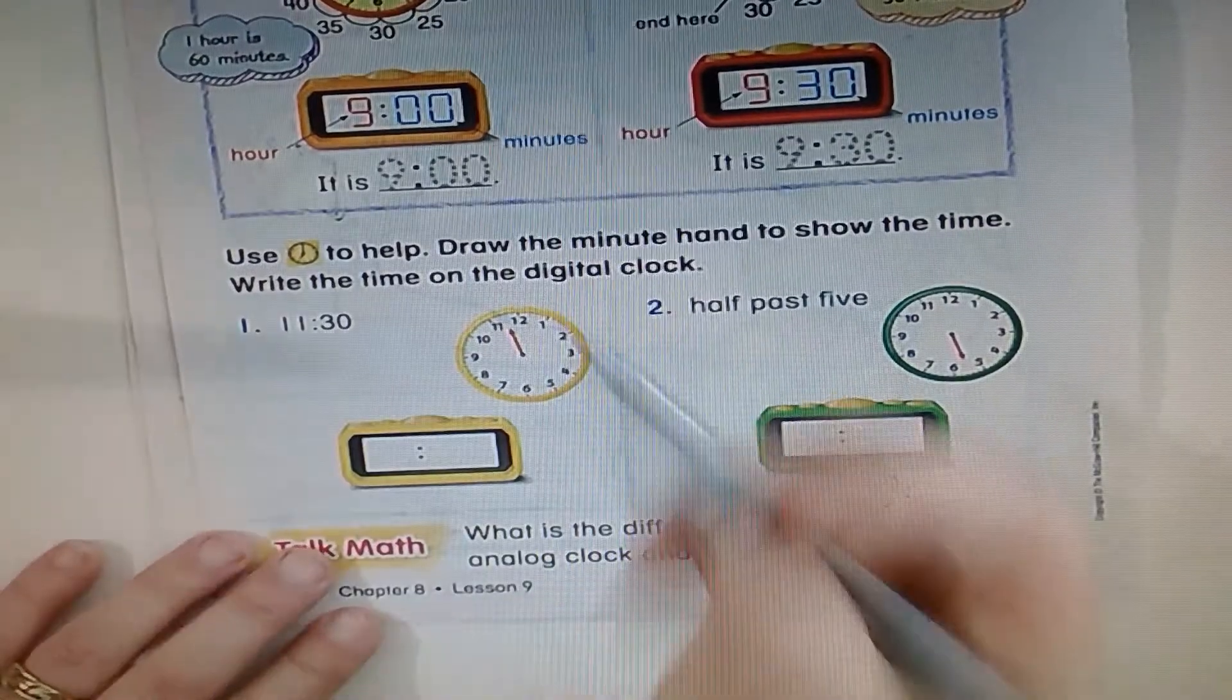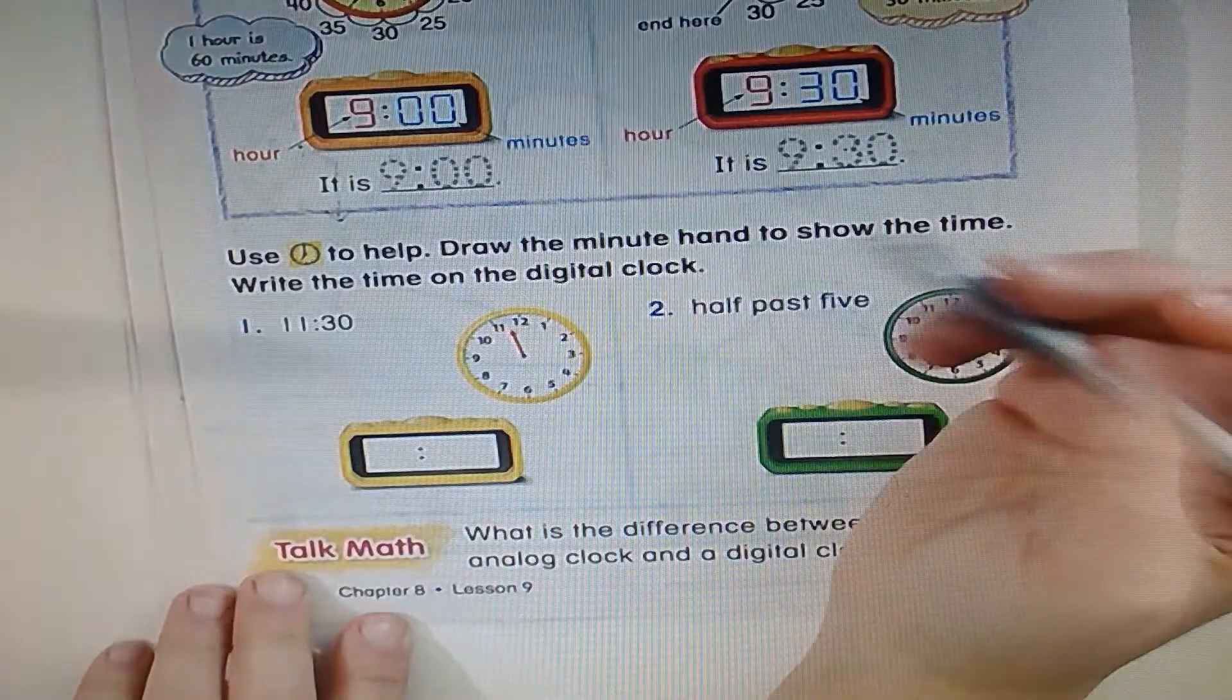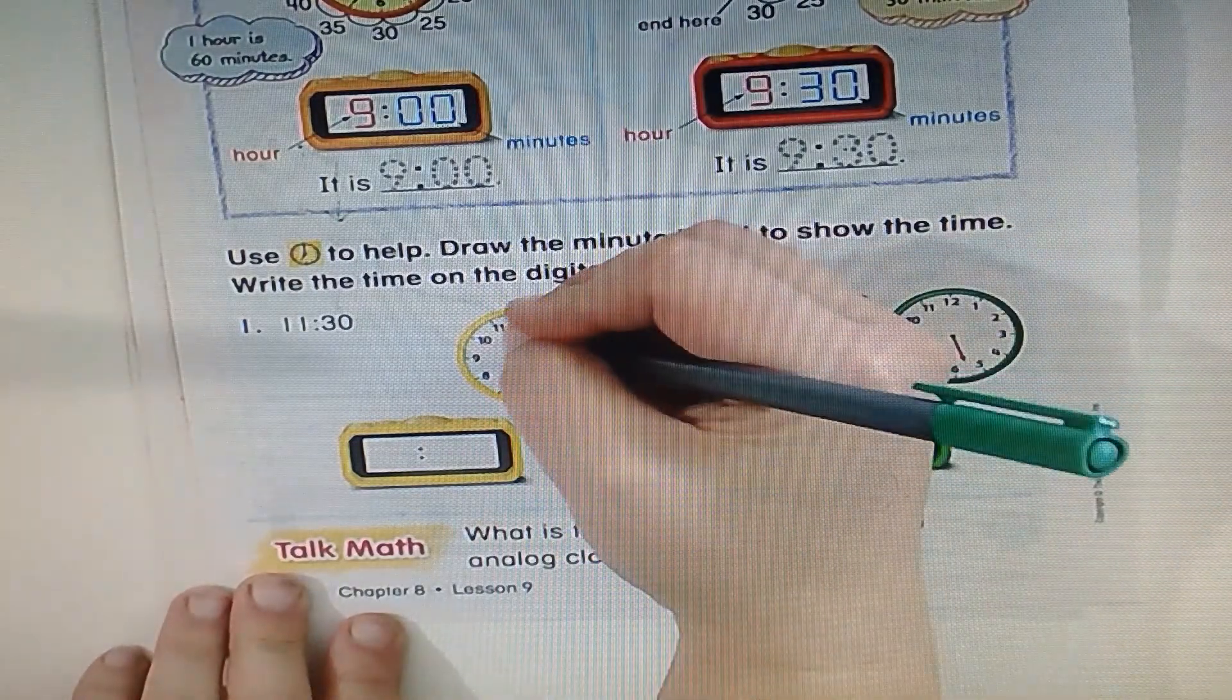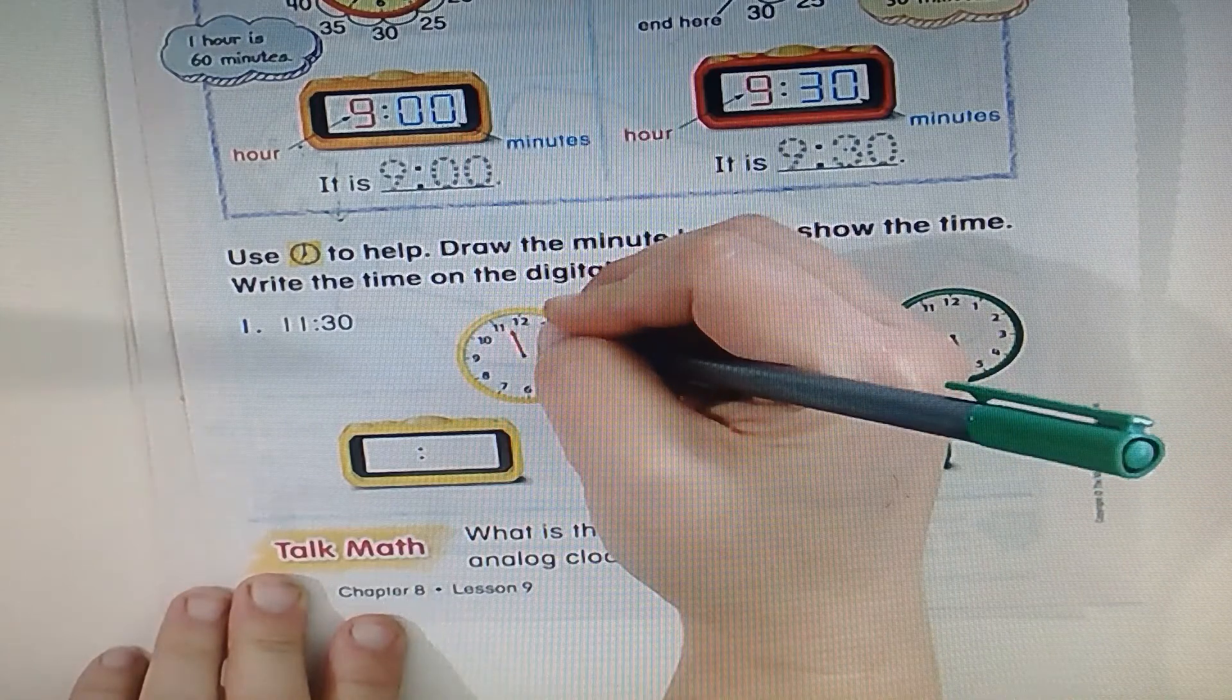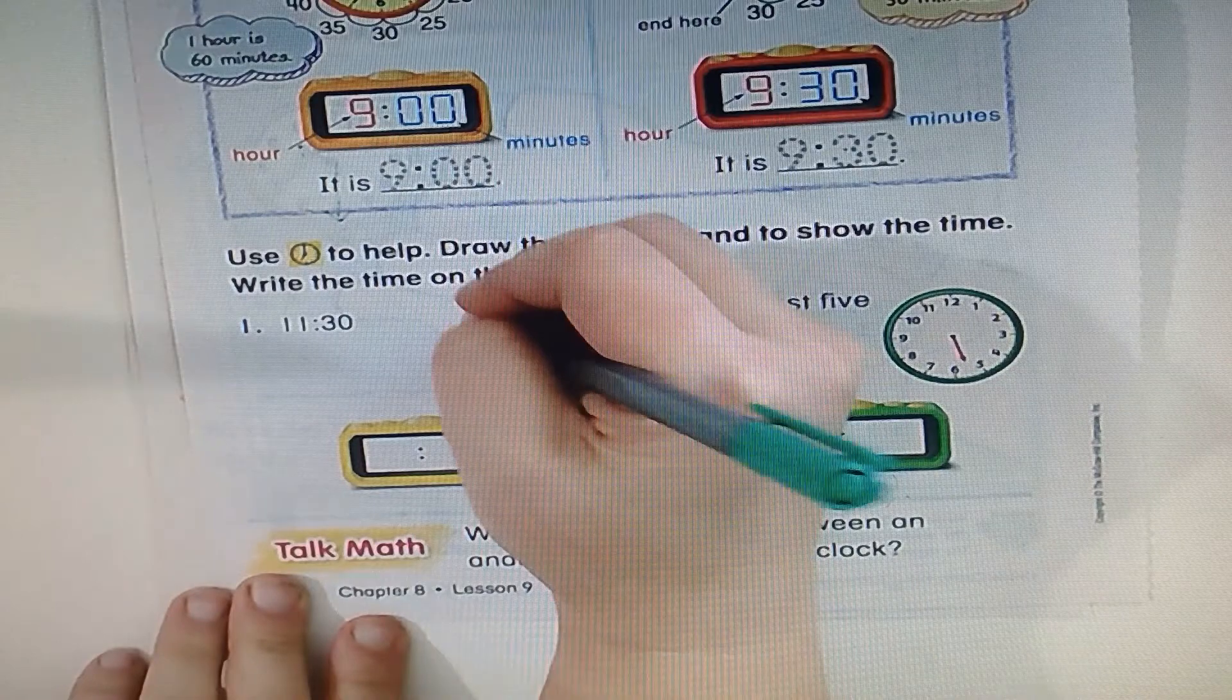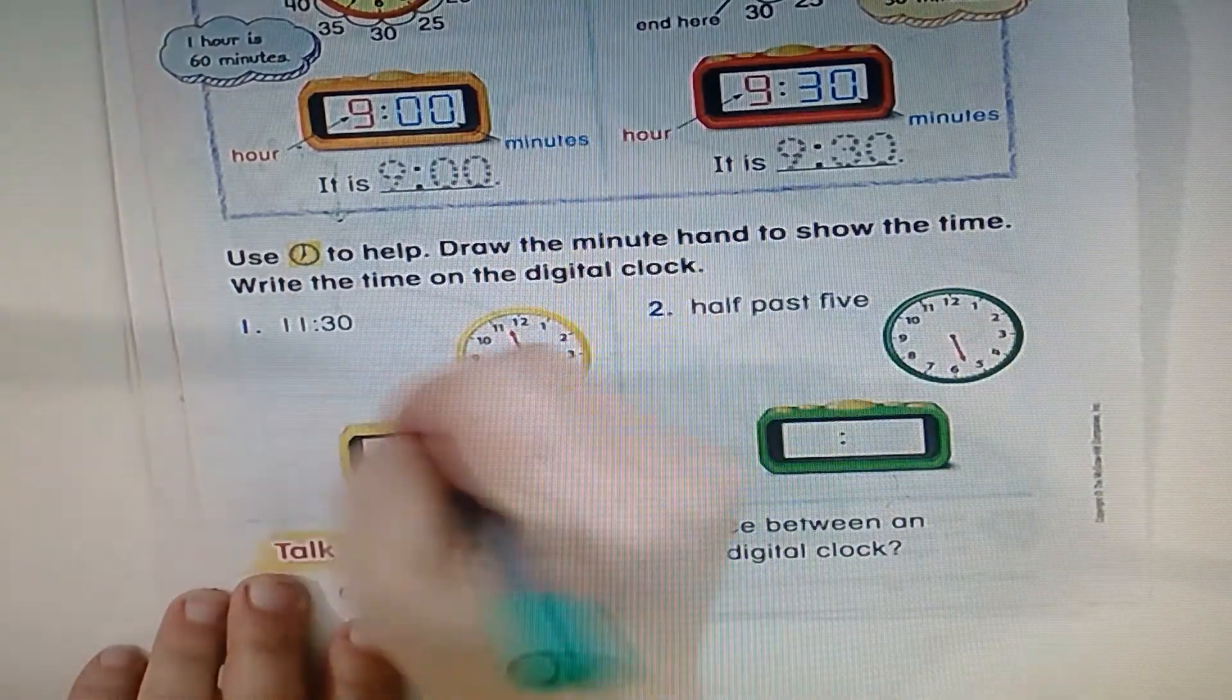So take a look at this one, number one. Look at where that red hand is pointing. Is it pointing directly to a number or in between two numbers? In between two numbers, it's between the 11 and the 12. And since we're talking about half hours, I know that it must be 11:30.